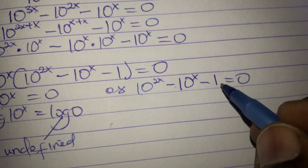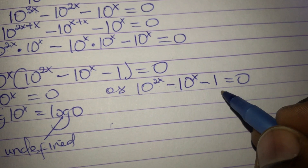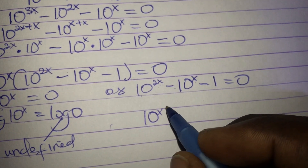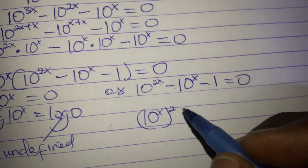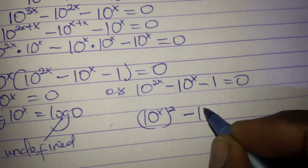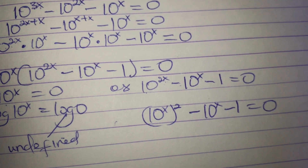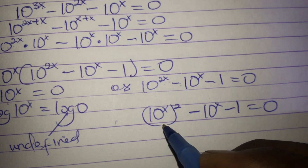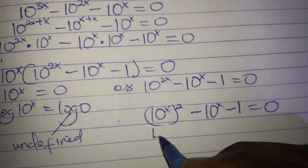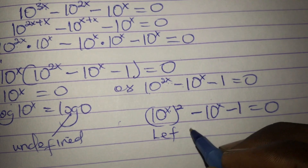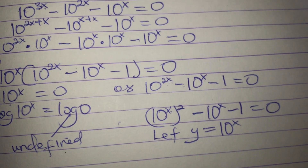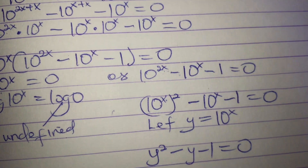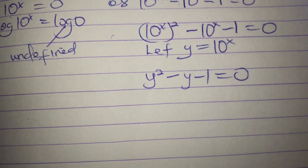Now let's tackle the second part: 10 exponent 2x minus 10 exponent x minus 1 equals zero. Since 10 exponent 2x is (10 exponent x) squared, I'll let y equal 10 exponent x. This transforms the equation into a quadratic: y squared minus y minus 1 equals zero. So we arrive at a quadratic equation, and we solve it for the values of y.